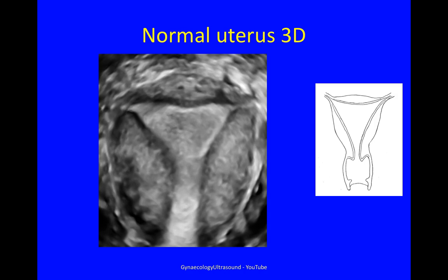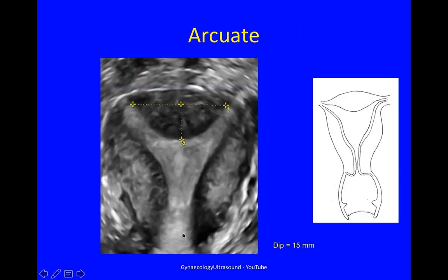Here are some examples of what these uteruses look like on 3D. This is a normal uterus seen on 3D — a nice myometrial contour, a flat cavity, two interstitial portions of the fallopian tube, and a cavity going down to a single cervix.